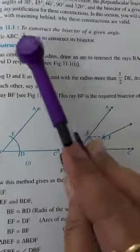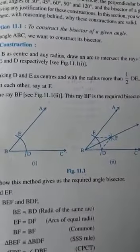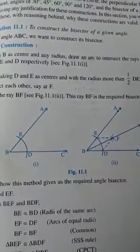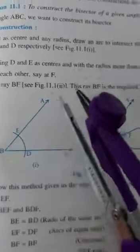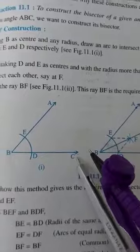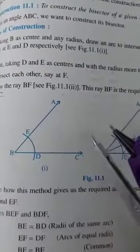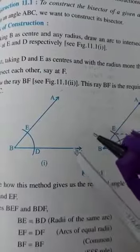Now, the first construction is to construct the bisector of a given angle. Here we have made an angle ABC. Now, we'll check if the bisector we make divides this angle into equal parts, two angles.